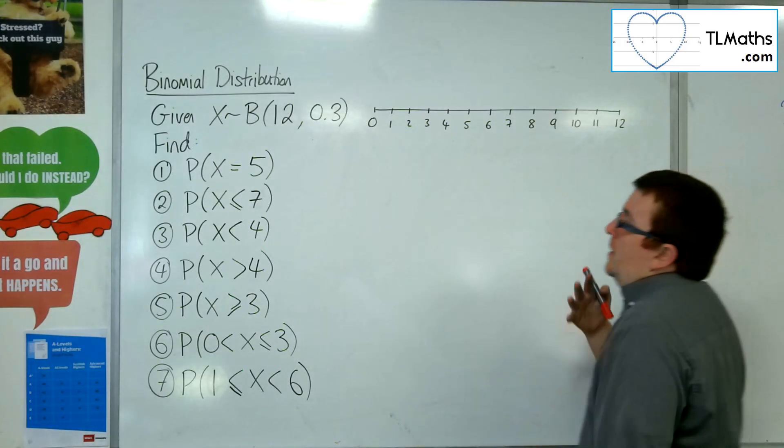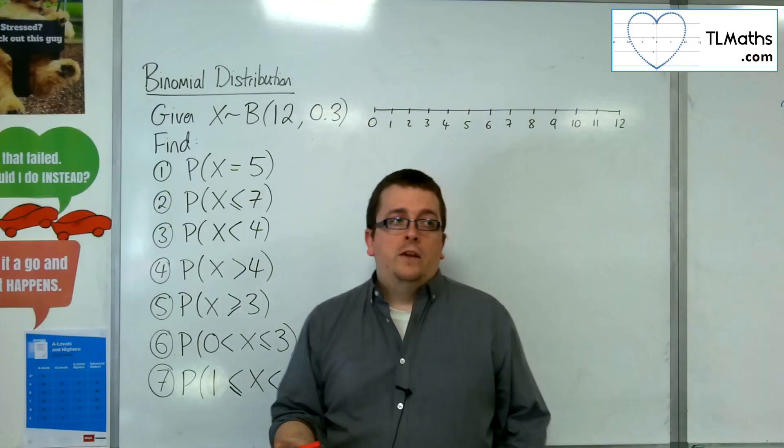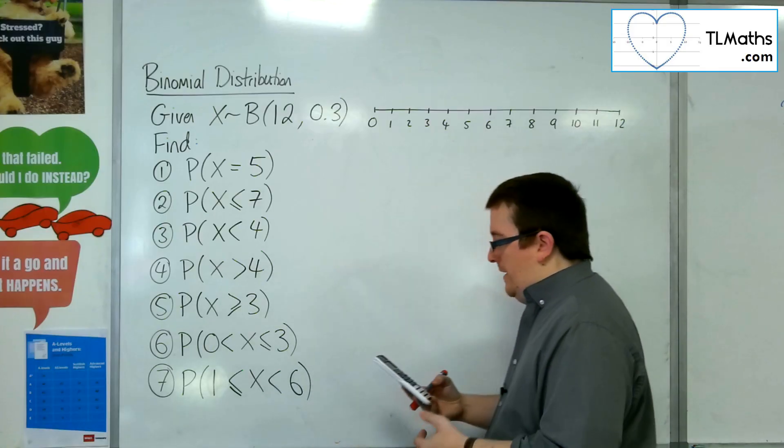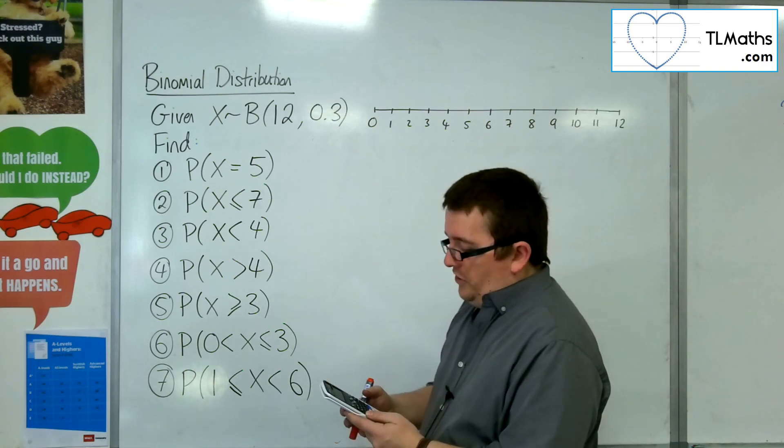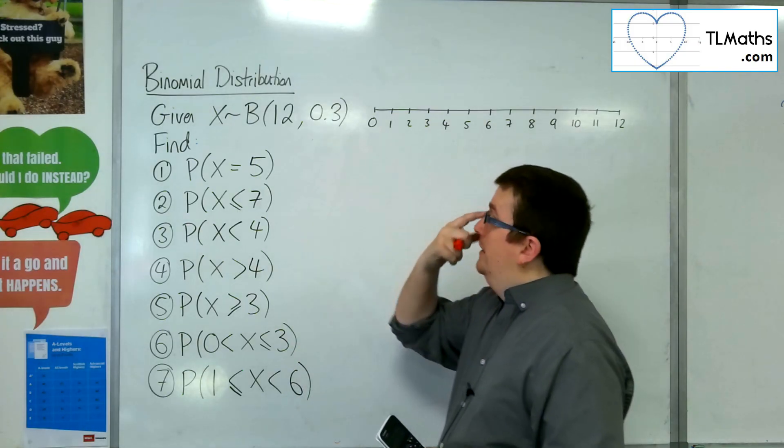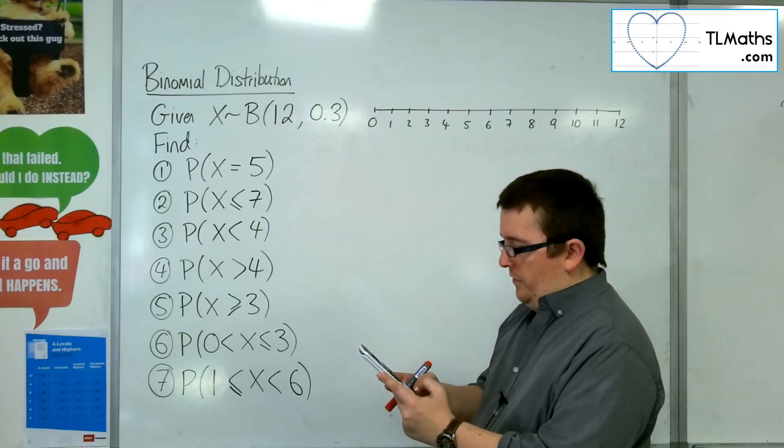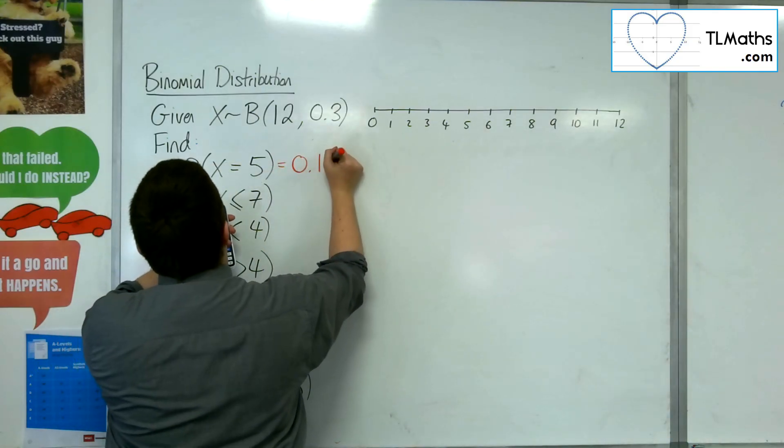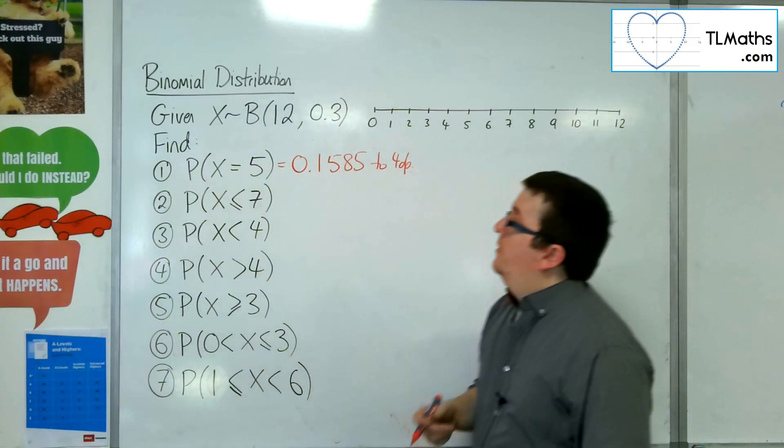So first of all, basic one, finding a particular value, x equals 5. So you're first of all going to want to go to menu and then number 7 for distribution and then binomial PD, number 4. And then you want to go to variable, option number 2. So we've gone for PD because we want a particular value. So we want when x is 5 and n is 12 and the probability of success is 0.3. Press equals and we get 0.1585 to 4 decimal places.